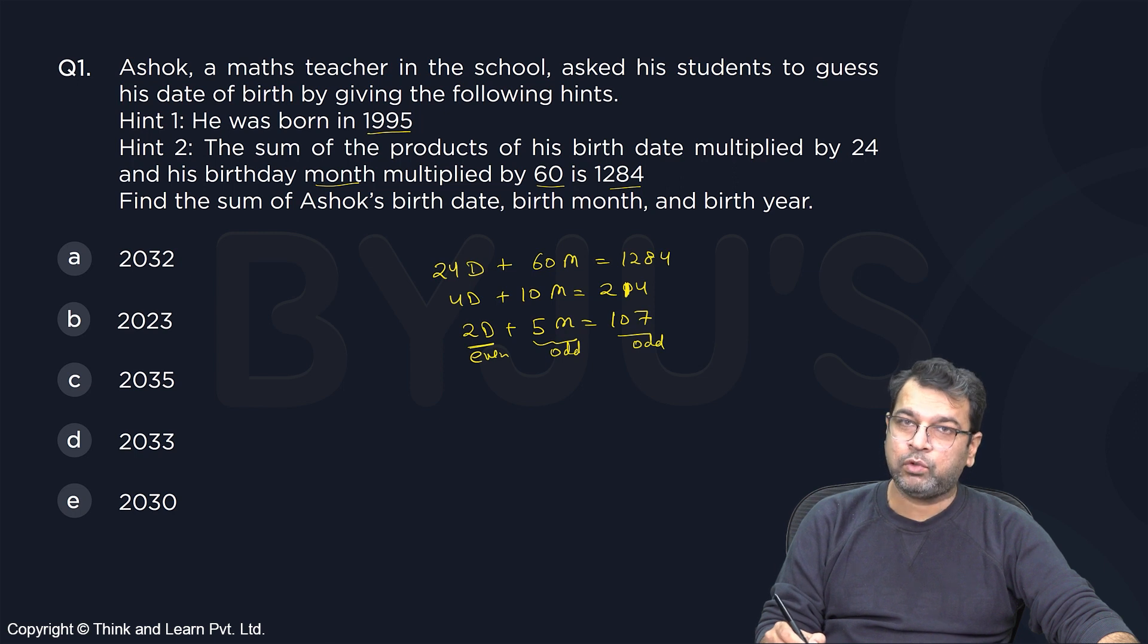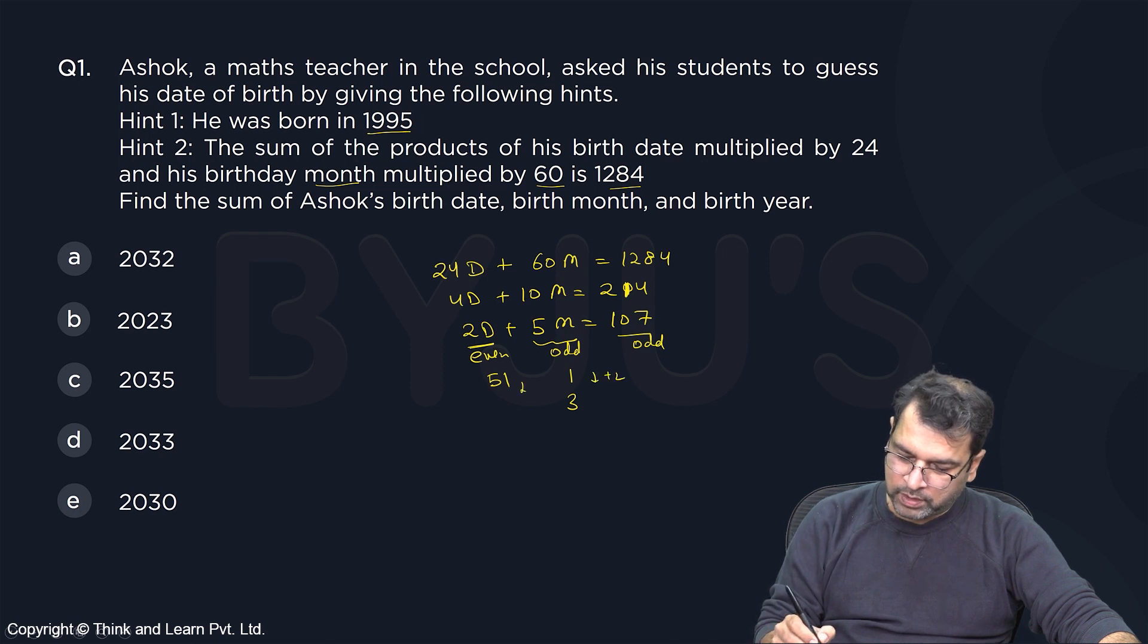So for 5M to be odd, the possibilities for M can be what? 1, 3, 5, M has to be odd. So for example, if M is 1, we will get D as 51, I think. But obviously number of days cannot be 51, correct? So now if you increase this by 2, this will fall down by 5. So obviously, we need to start with a number for which D is basically lower.